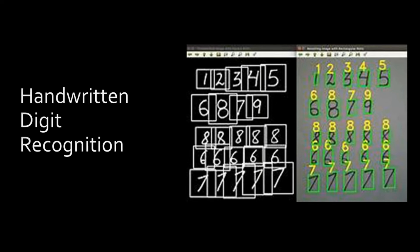If we take this further, we can recognize alphabets — both capital and small — in handwritten form. Finally, what we can do is write on a paper, upload a photo of that paper into the computer, and the computer will take all the data from that paper as input and automatically create a valid document. You don't have to type everything — just take a photo, send it to the computer, and it will recognize all the letters and words.